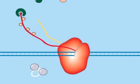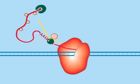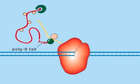At a polyadenylation signal, a protein complex cleaves the mRNA and adds a poly-A tail on the 3' end.